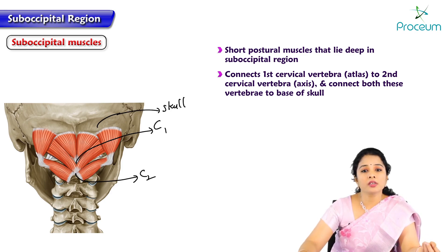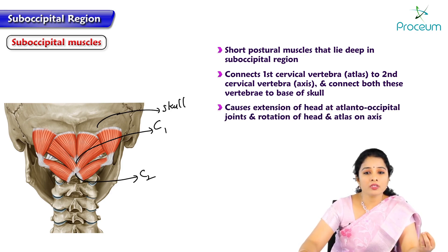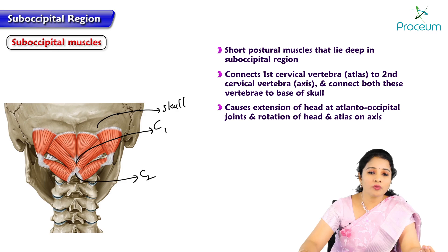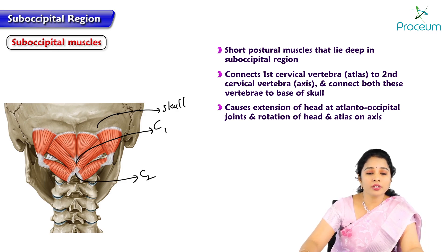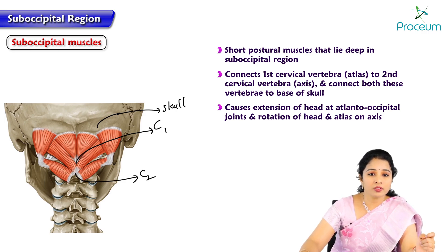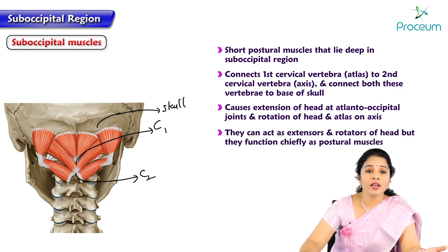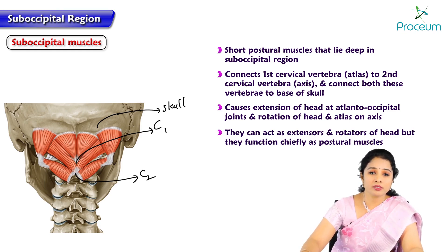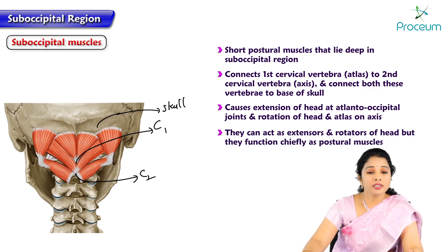The suboccipital muscles altogether cause extension of the head at the atlanto-occipital joint and rotation of the head at the atlanto-axial joint. They can act as extensors and rotators of the head, but they function chiefly as postural muscles.